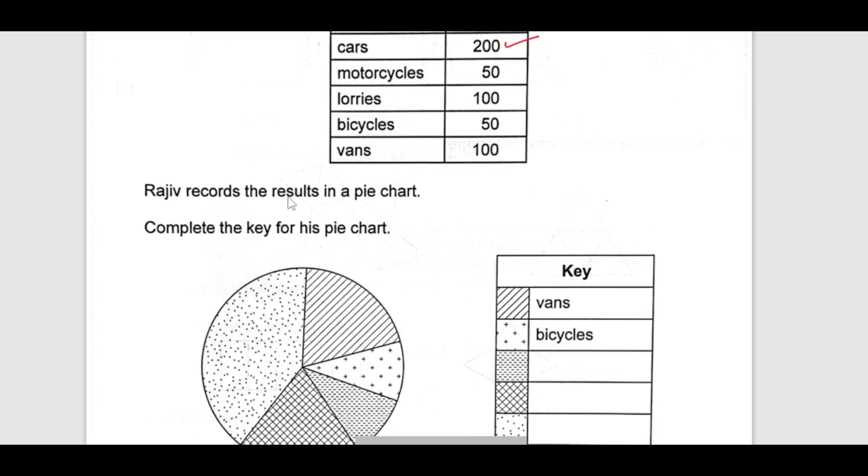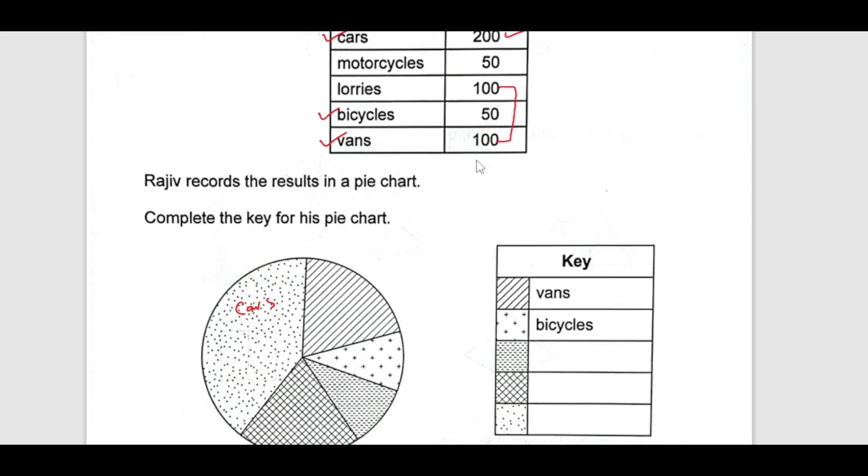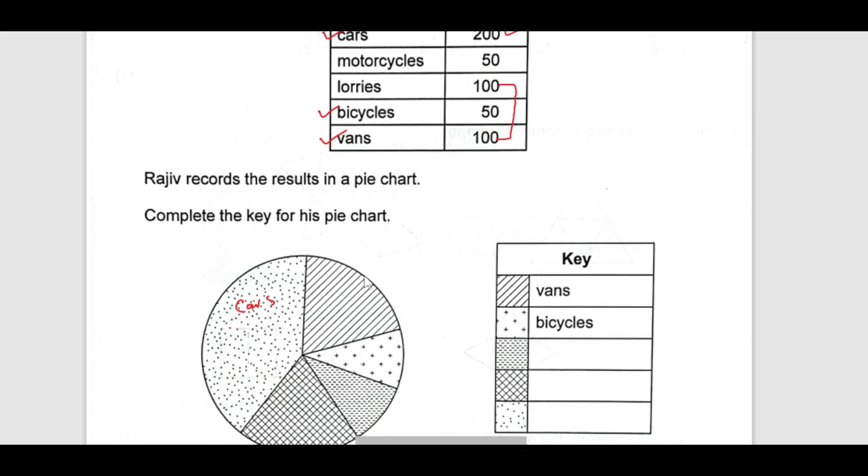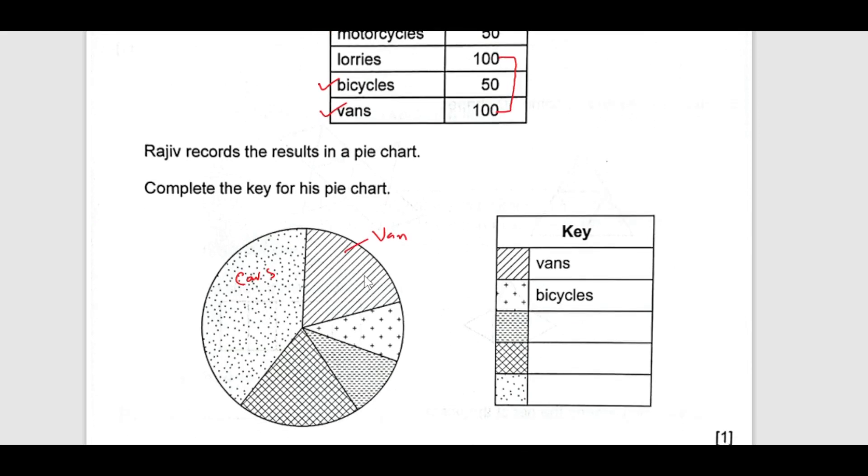That means this should be the cars. And then we have given the van. Van is already given and bicycle is given. Cars we have sorted it out. So, vans and lorries have the same, 100. If you see van is this one. If this is a van, what should be the lorry? Lorry should be this the squared one. This is the lorry.